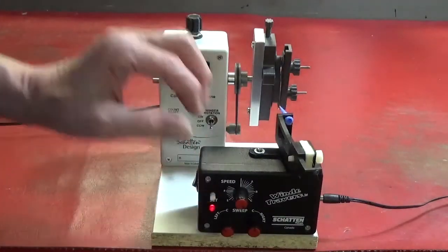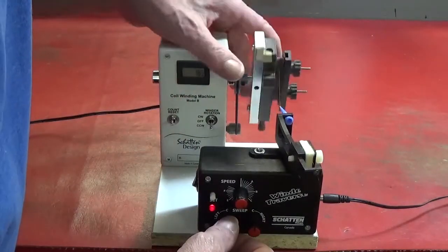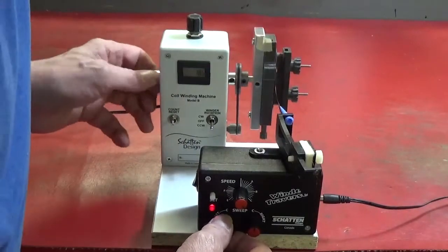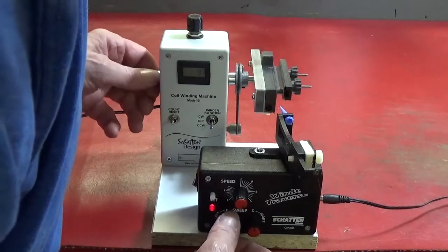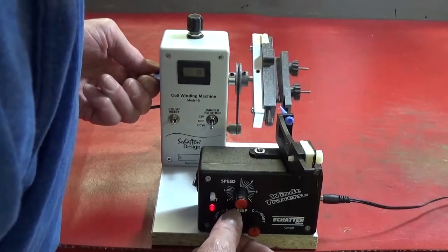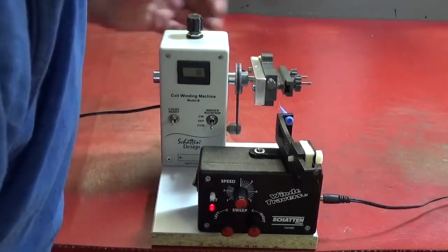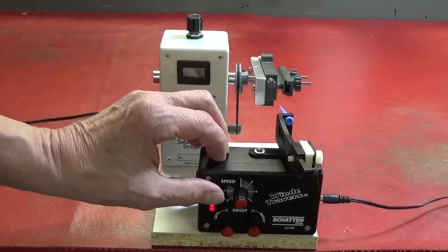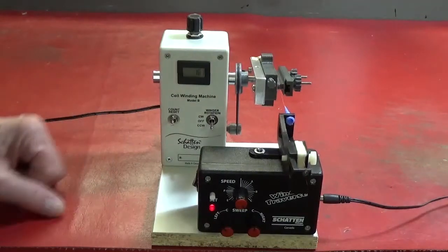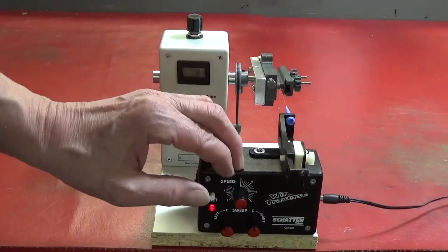Press it again and let's run this a bunch of times around. Turn it on so it sweeps back and forth, speed is set around C.